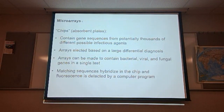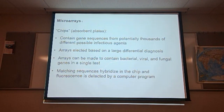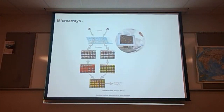Microarrays or chips contain gene sequences from potentially thousands of different possible infectious agents. These arrays are selected based on large differential diagnoses, and can be made to contain bacterial, viral, and/or fungal genes in a single test. Matching sequences will hybridize on the chip and fluoresce if detected by a computer program. If hybridization occurs and fluorescing shows on the computer program, then you know the patient's serum contains the particular agent you're looking for.